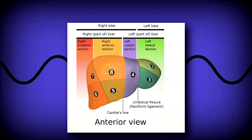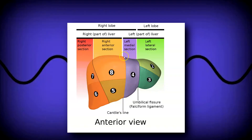In Couinaud anatomy, the liver is divided into left hemiliver and right hemiliver. Segments two and three are divided from four by the falciform ligament. Cantley's line, which contains the gallbladder and the middle hepatic vein, separates segments four, five, and eight. The right hepatic vein separates segments seven and six from eight and five.